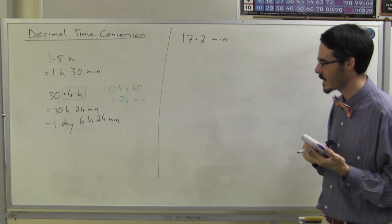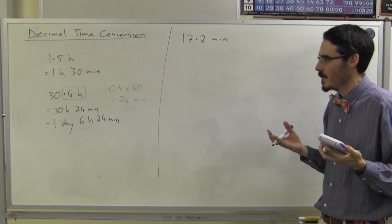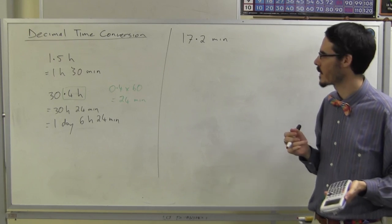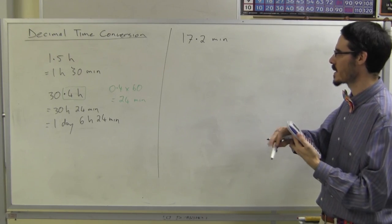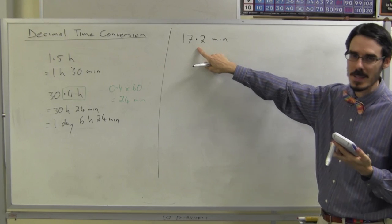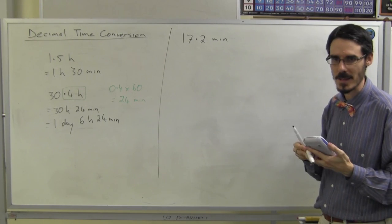17.2 minutes. So I want minutes and seconds. It's not 17 minutes and 20 seconds or 17 minutes and 2 seconds. This is 2 tenths.